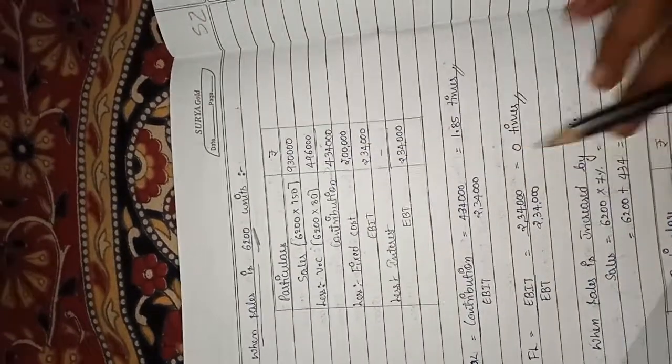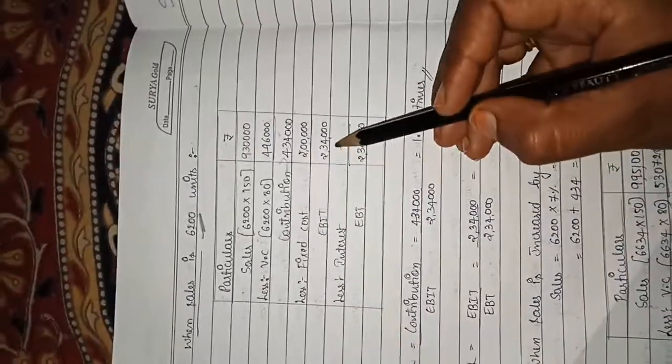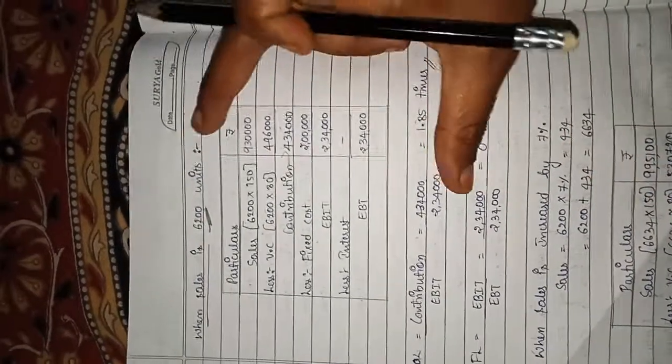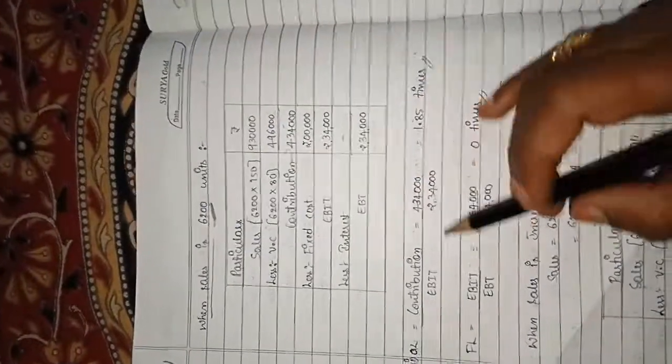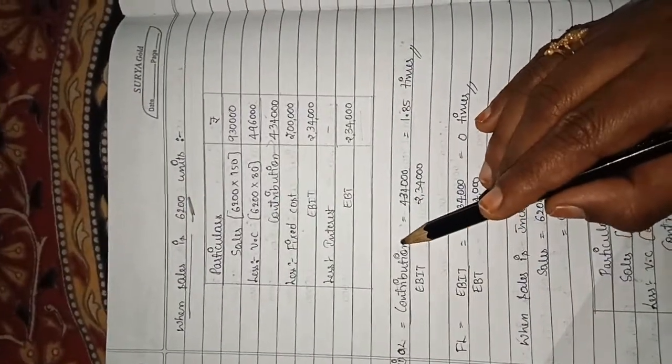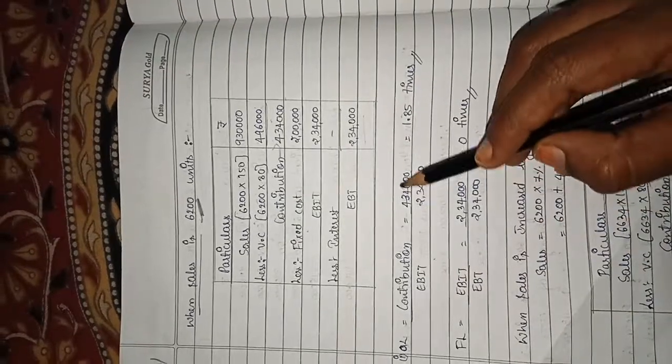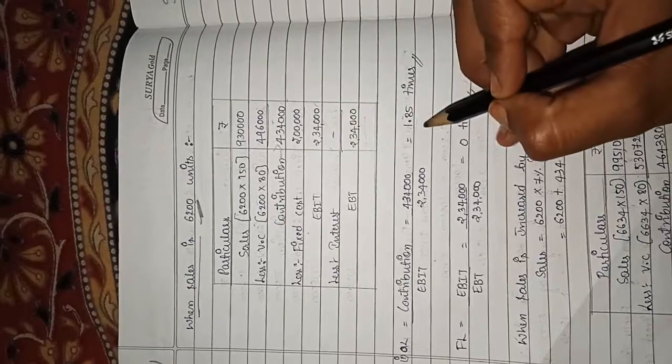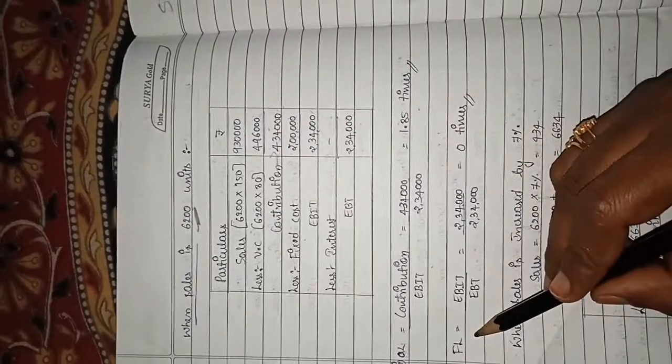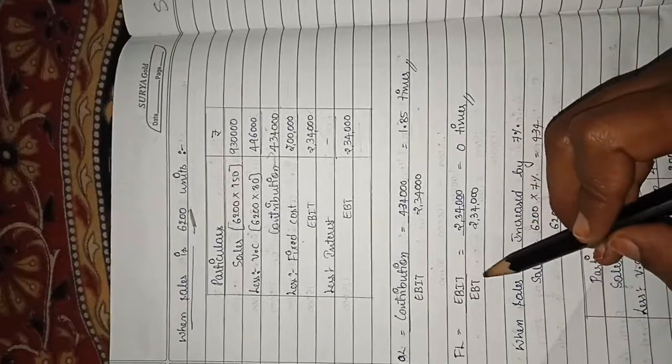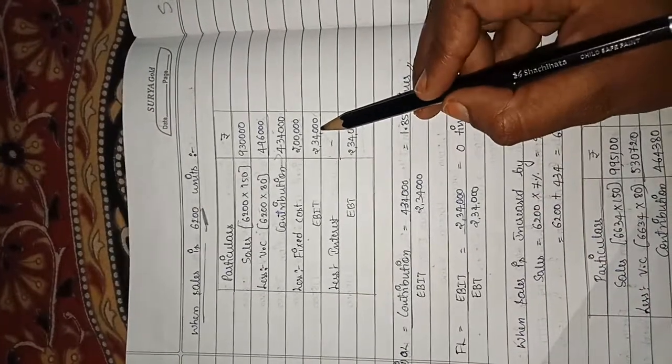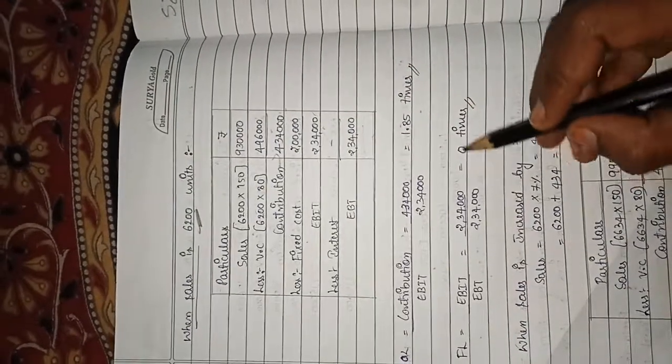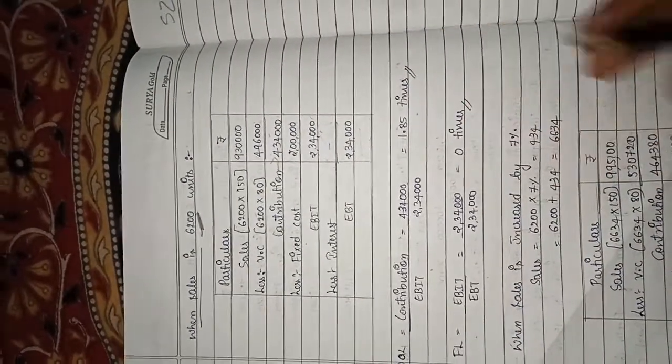EBIT is 2,34,000. No interest has been given, so finally we get EBT 2,34,000. Operating leverage equals contribution divided by EBIT: 4,34,000 divided by 2,34,000 equals 1.85 times. Financial leverage is EBIT divided by EBT: 2,34,000 divided by 2,34,000, so henceforth the financial leverage will be 1 time. This ends question number one.